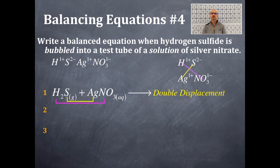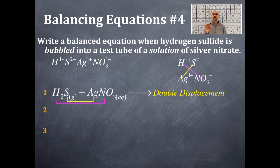I'm going to look at HNO₃ and my solubility rules, which we discussed already in this unit. All nitrates are soluble — there are no exceptions to that. So HNO₃ will have an AQ (aqueous) at the end of it.